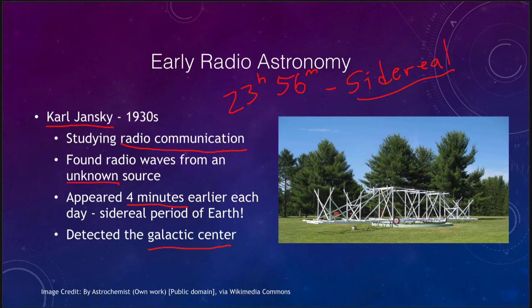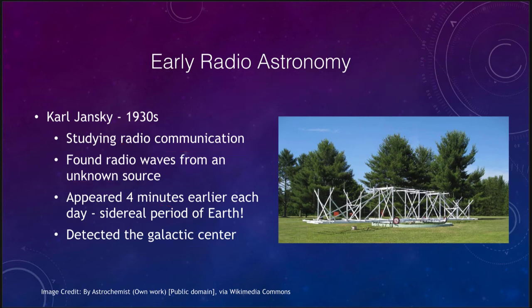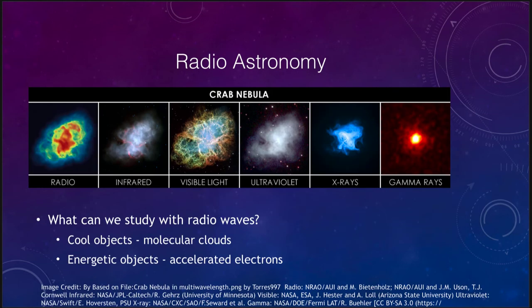The center of our galaxy is invisible in visible light — you cannot see it by looking at visible light. But in radio waves, it is one of the strongest radio sources in the sky. Therefore, Carl Jansky was able to detect it with his early instrumentation. When we look at various objects, they can be quite different when we look at them in optical or radio.